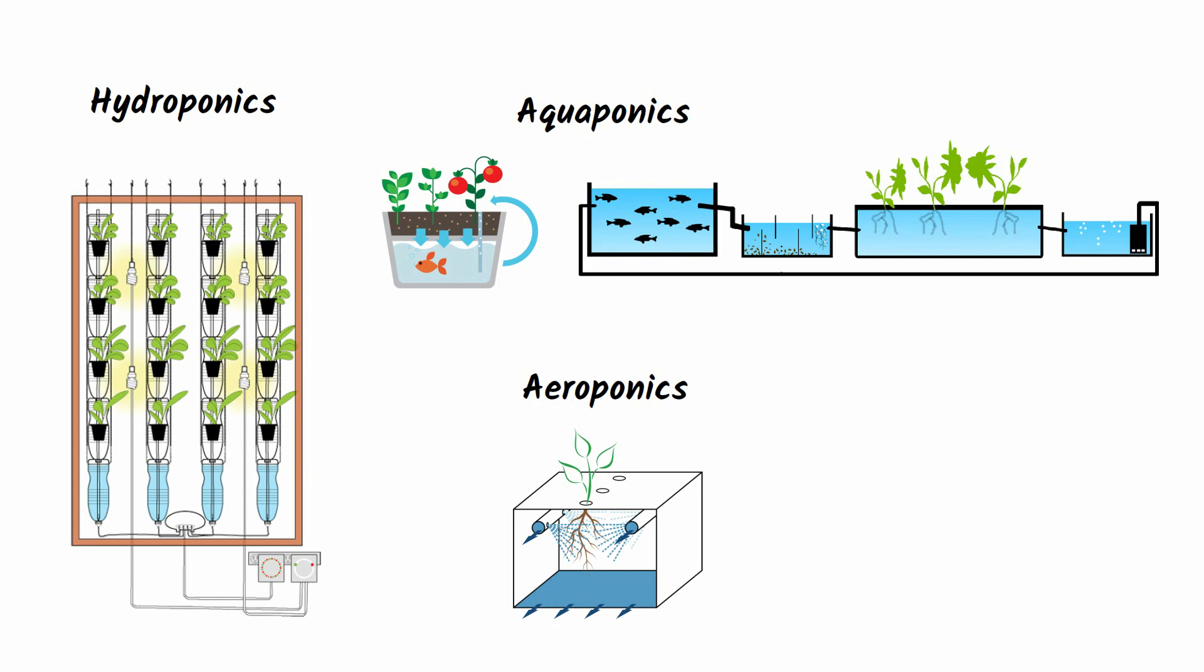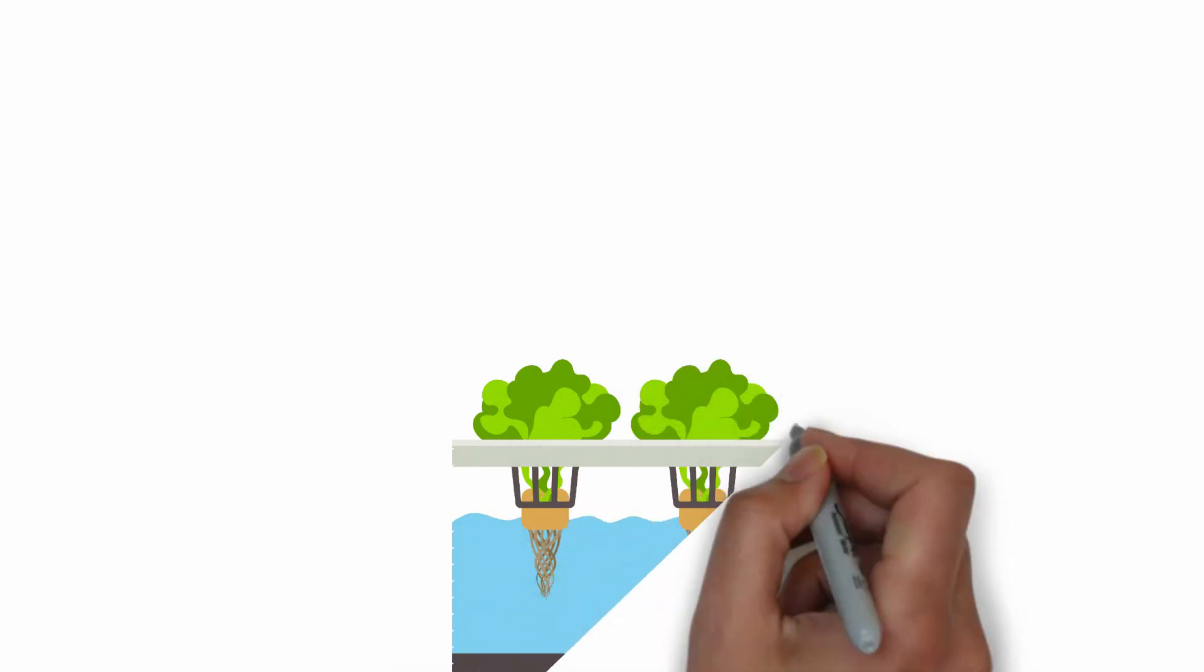In an aeroponic system, the roots of the plants hang down freely instead of a substrate. The growing container only contains mist made up of air and a nutrient solution that is regularly sprayed towards the plants. Let's summarize what to remember when growing plants without soil.